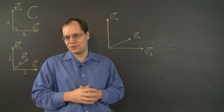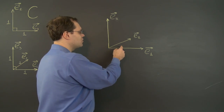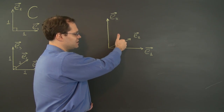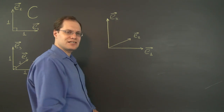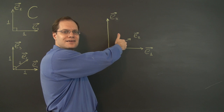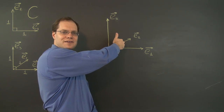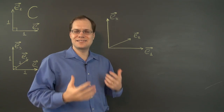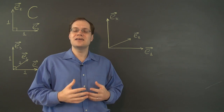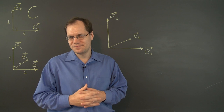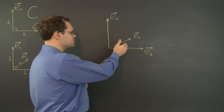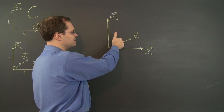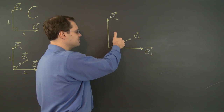Here is the definition for three dimensions. We go from E1 to E2 in the shortest direction with our right hand, and look at the direction of the thumb. If the thumb points in the same direction as the third vector E3, the basis is called right-handed. If it points in the opposite direction, it's called left-handed. A right-handed basis is said to be positively oriented. This definition does not rely on the basis being orthogonal or orthonormal — it works for any basis.